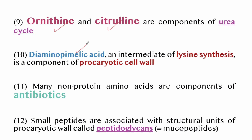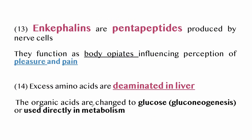Ornithine and citrulline are components of the urea cycle. Diaminopimelic acid is an intermediate of lysine synthesis and also a component of the prokaryotic cell wall. Many non-protein amino acids are components of antibiotics. Some peptides are associated with the structural units of prokaryotic cell walls known as peptidoglycan or mucopeptide.